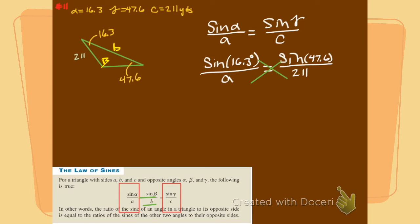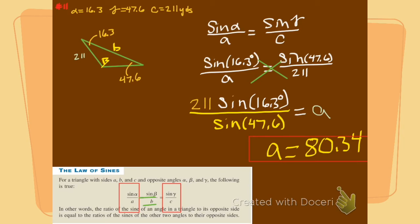I'm one that likes to put it all in the calculator at one time. So I'm going to multiply both sides by 211. I'm going to divide both sides by sine 47.6. I'm going to multiply both sides by an A. Just like a little bit of this, a little bit of that. Then we throw that into the calculator. We pound it out. And it turns out to be that A is 80.3.